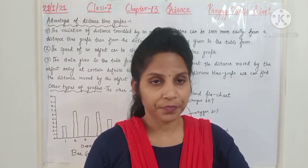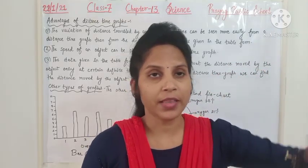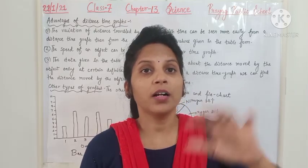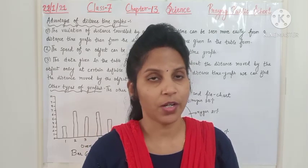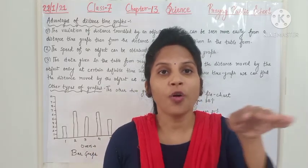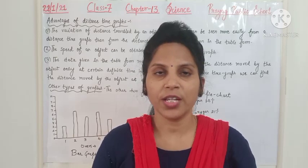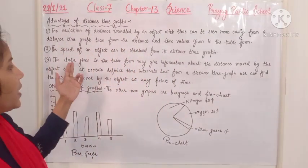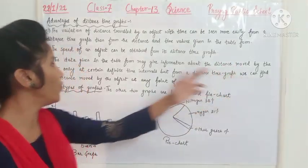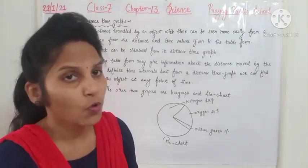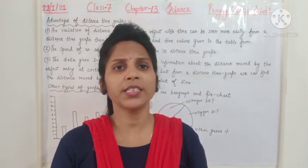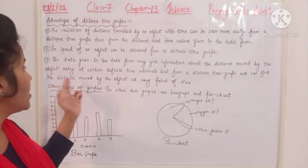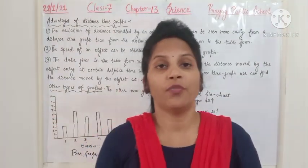For example, if the distance-time graph is a straight line, we can say the object is moving with uniform speed. If the distance-time graph is a curved line, that means the object is moving with non-uniform speed. If the distance-time graph shows a horizontal line, the object is stationary and its speed is zero. The third advantage is that data in table form gives information only at certain definite time intervals, but with a distance-time graph we can find the distance moved by the object at any point in time.